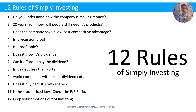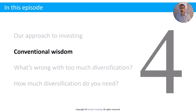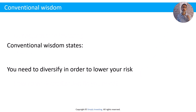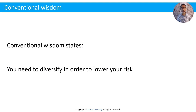That's why we have the 12 rules — this is the checklist. It doesn't matter if you're in love with a company or a stock; you want to make sure it passes the 12 rules before you invest. So let's move on to our next topic. What does conventional wisdom say when it comes to diversification? You've probably heard this over and over again. Conventional wisdom states that you need to diversify in order to lower your risk when it comes to investing.